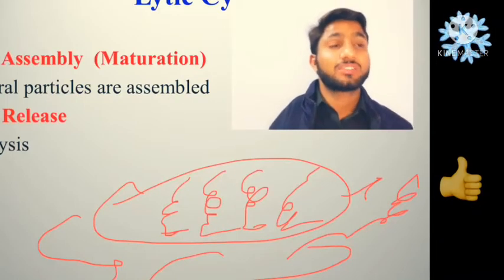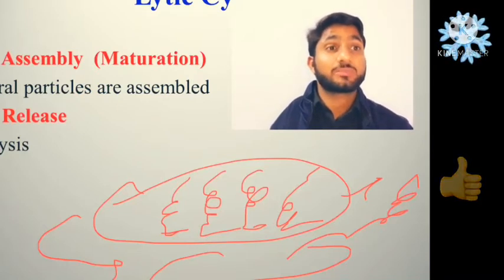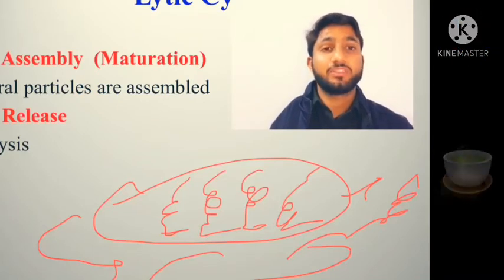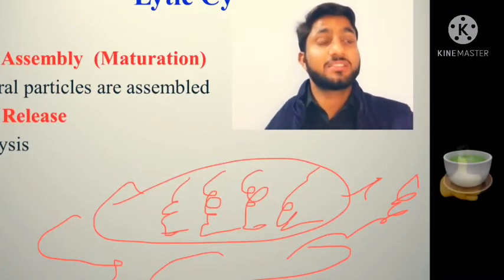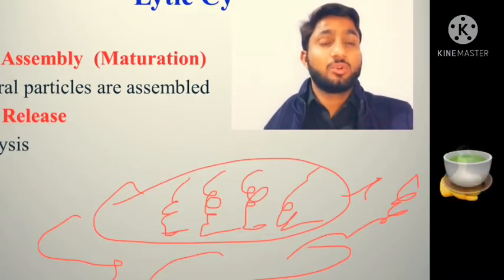If we consider human cells — if this type of virus enters human cells — then the virus very quickly, within seconds, will be killing a large number of human cells, similar to what we observe happening in the bacterial cell during the lytic cycle.